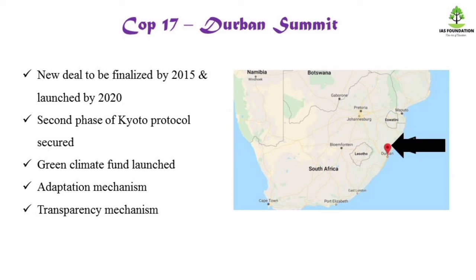COP-17 is the Durban Summit, held in South Africa. In this meeting, there was an agreement to negotiate a new climate deal by 2015, to be launched in 2020. The Kyoto Protocol second phase was agreed. The Green Climate Fund was launched, along with an Adaptation Mechanism and Technology Transfer Mechanism.